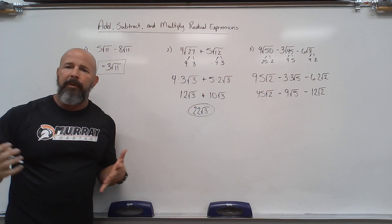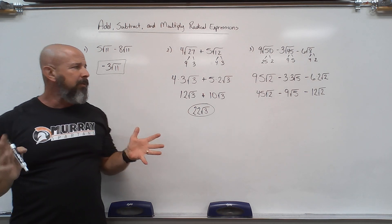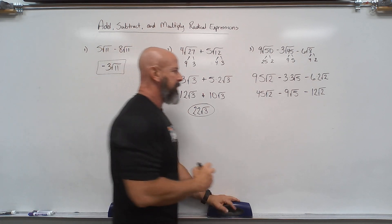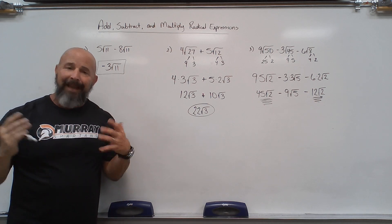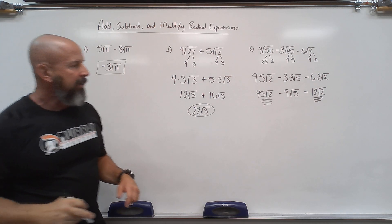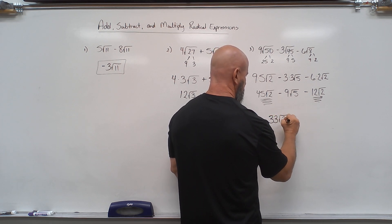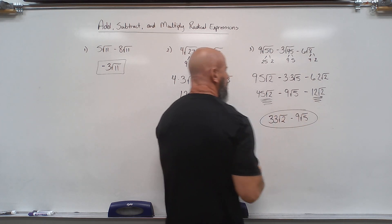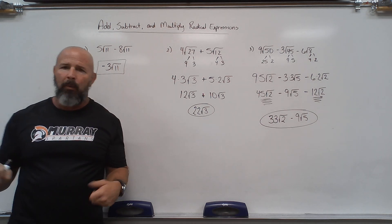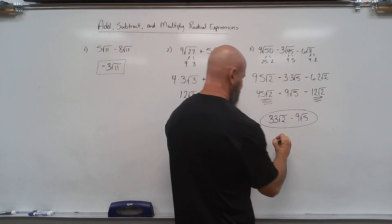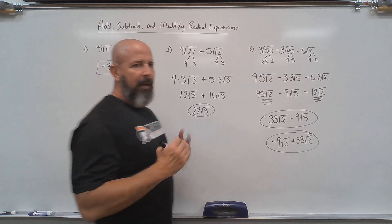I've simplified each of the three terms — that's where most of the work came in. Now I look at the terms and check for like terms. I have two: the first and the third both have root 2, so I can combine those. 45 minus 12 is 33 root 2, then minus 9 root 5. It doesn't matter what order they're in — you could write it as negative 9 root 5 plus 33 root 2 and either way is correct.